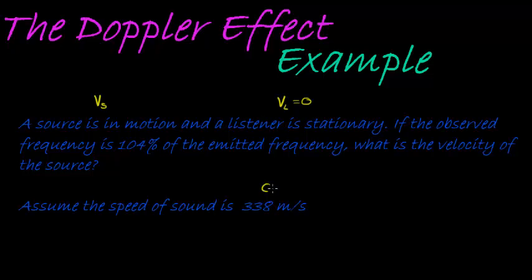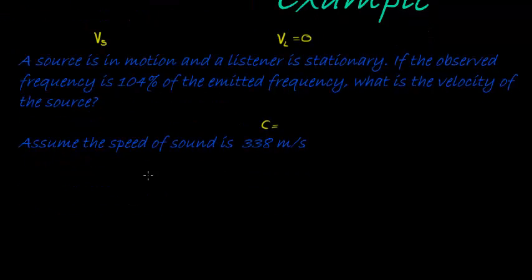And they tell us assume the speed of sound. That's the speed of sound. Okay, so with that in mind, let's just see. Our formula is actually the frequency observed is equal to c minus the velocity of the listener divided by c minus the velocity of the source times the frequency of the source.